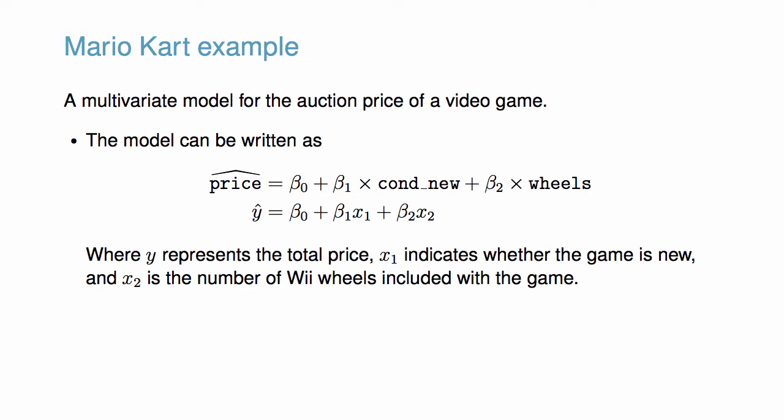Here we're using the reduced model which only includes statistically significant predictors of auction price. Notice we're writing the estimated price as a linear function of the various predictors.